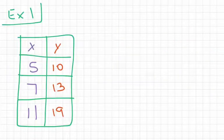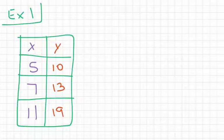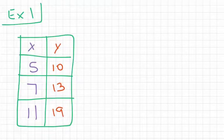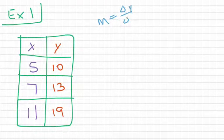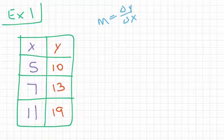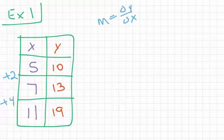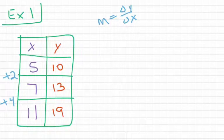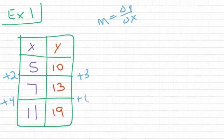For this first example, we want to determine if this table represents a linear relationship or not. We have x values of 5, 7, and 11, and y values of 10, 13, and 19. Typically, we would try to find our values for Δy and Δx, and use m = Δy/Δx to find the slope. Looking at the x row, we're going up by 2 first, then by 4. For the y values, we go up by 3, then by 6. Something doesn't seem right — it's not clear this will have a constant rate of change.